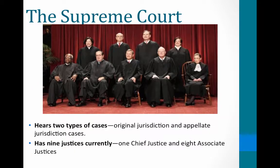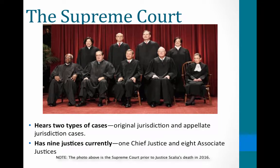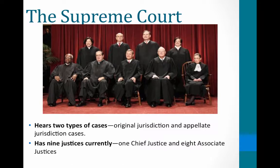The juiciest part of talking about the judicial branch is, of course, the Supreme Court — a long bench with nine justices hearing cases. They generally hear two types of cases: original jurisdiction and appellate jurisdiction. There are nine justices on the court; Congress could technically change this to 13 or 7, but as of now there are nine — one chief justice and eight associate justices.